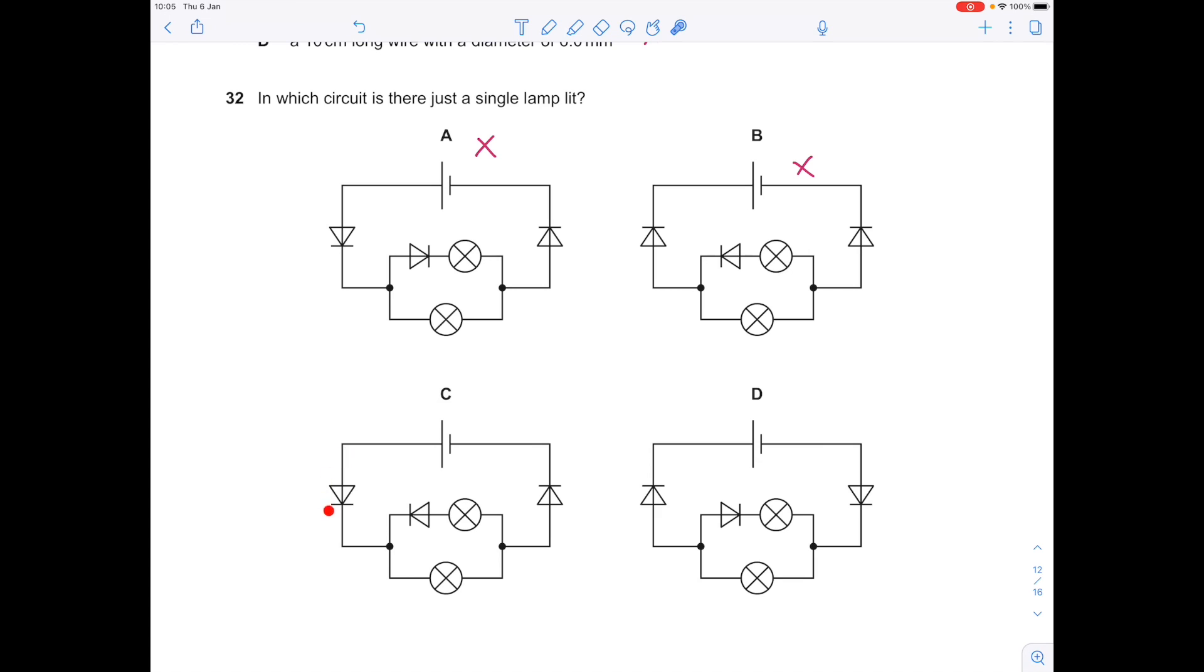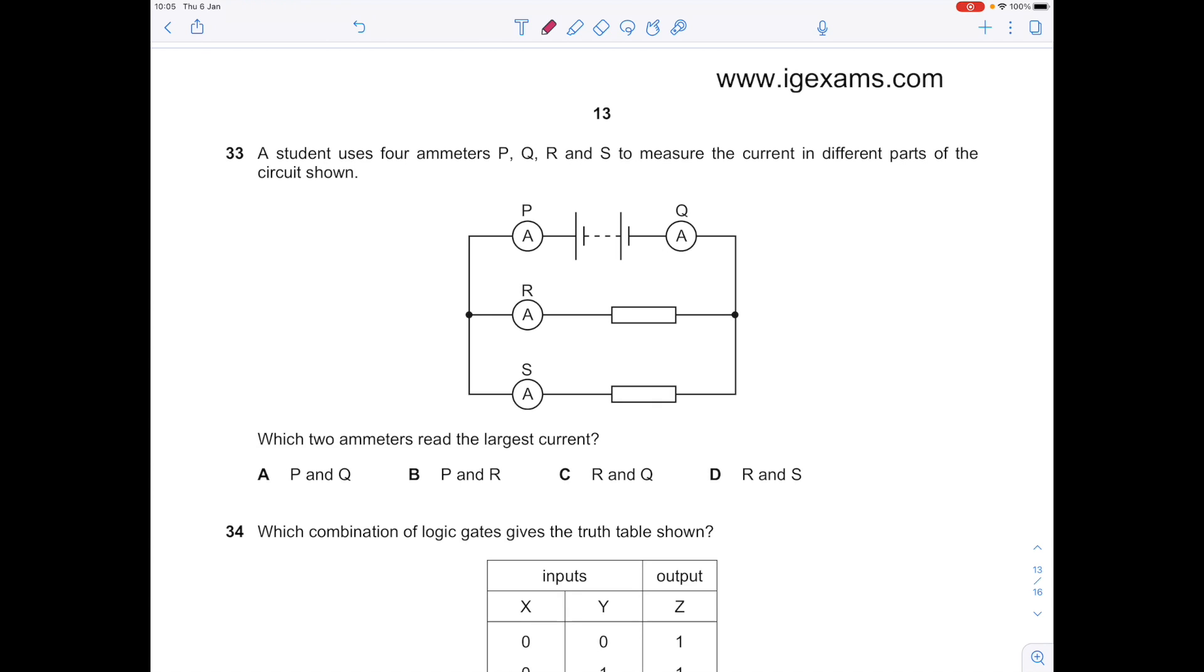C is looking more hopeful because we've got our diode pointing in the correct direction. It can't go this way because look at the direction the arrowhead's pointing. So they'll go down here causing this light bulb to be illuminated and then continue flowing around. C is the answer.